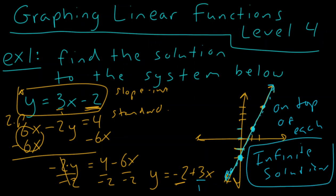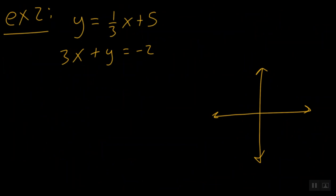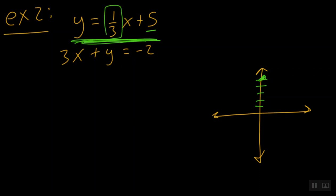For example two, we have y equals one third x plus five in slope-intercept form, and three x plus y equals negative two in standard form. Let's graph the top line in green. Our y-intercept is positive five, so we go up five and put our first point. Our slope is one over three, so we go up one and to the right three. Since we run out of room, we can go down one and to the left three, and draw that line.